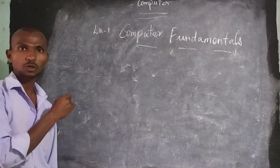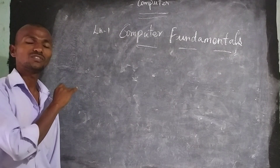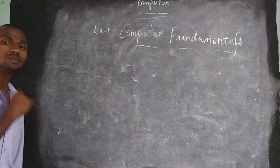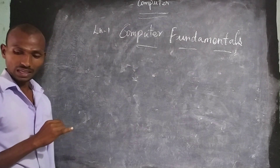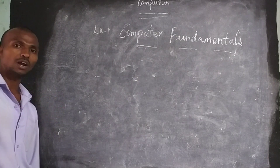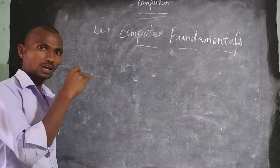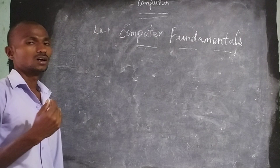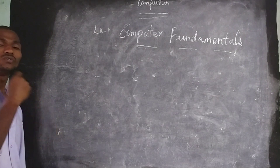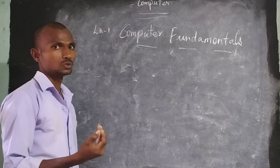Computer is an electronic data processing machine which performs millions of tasks with tremendous speed — very high speed. It has the capacity of storing a large volume of data for lifelong. We can store the data in the computer and use it in the future.